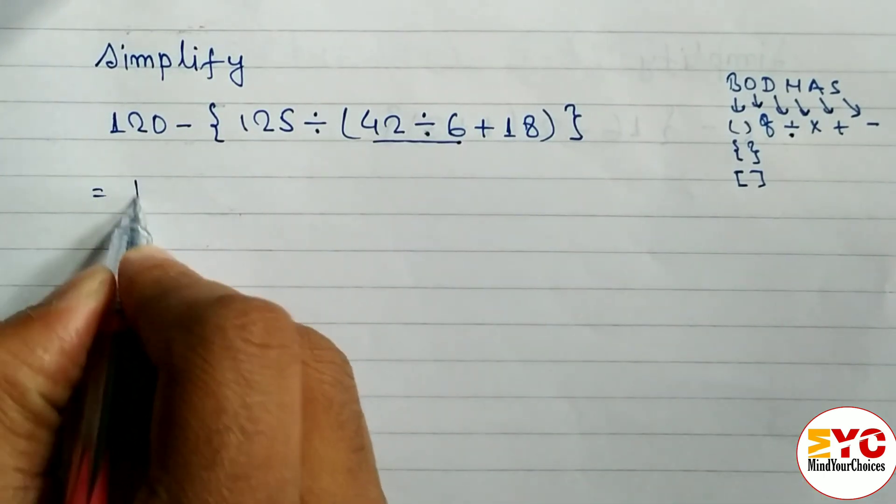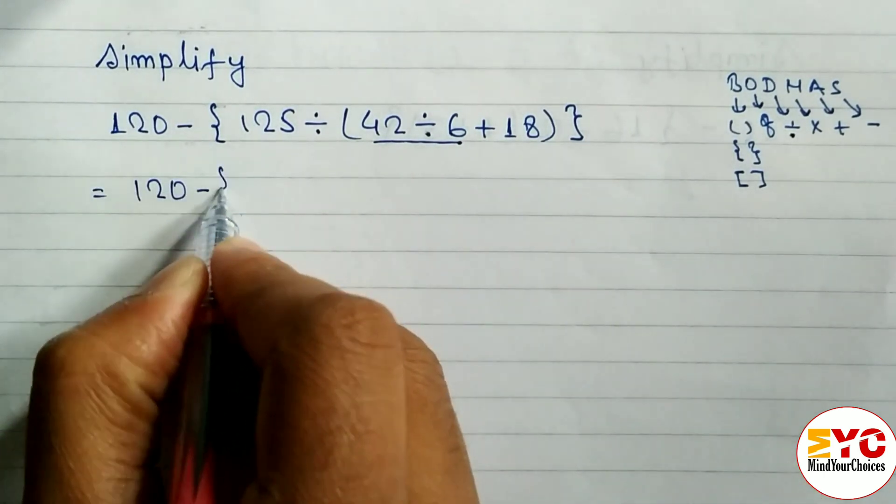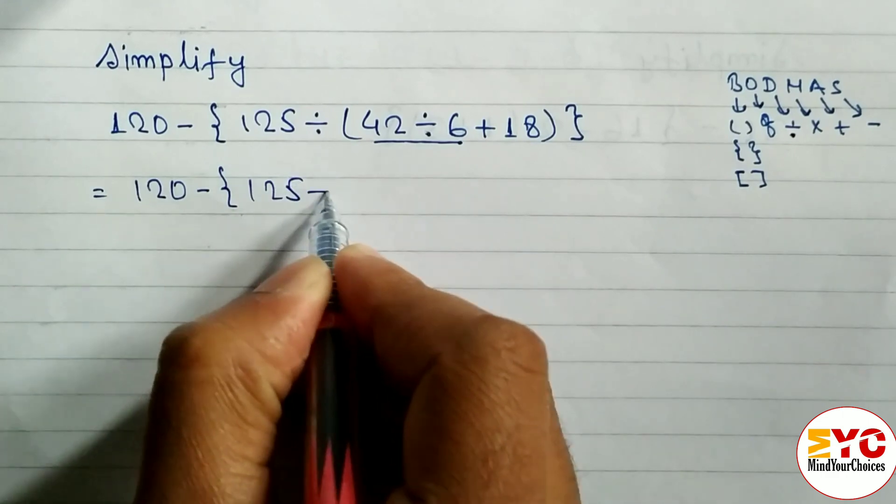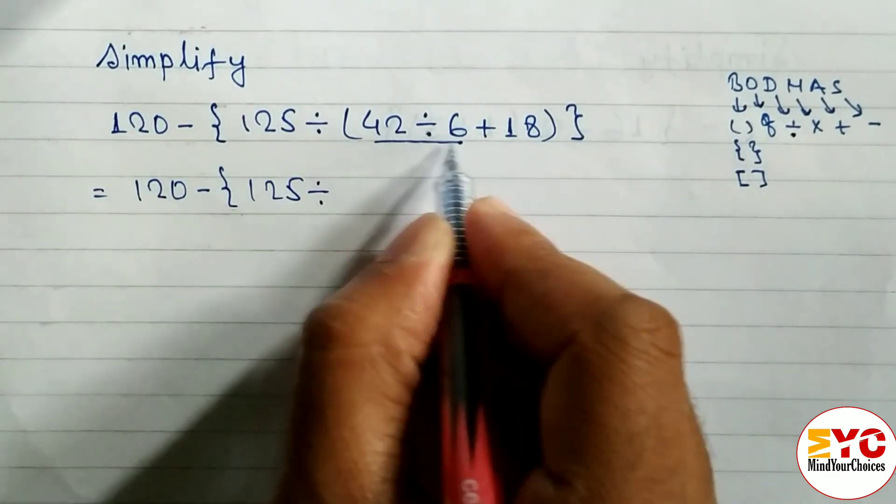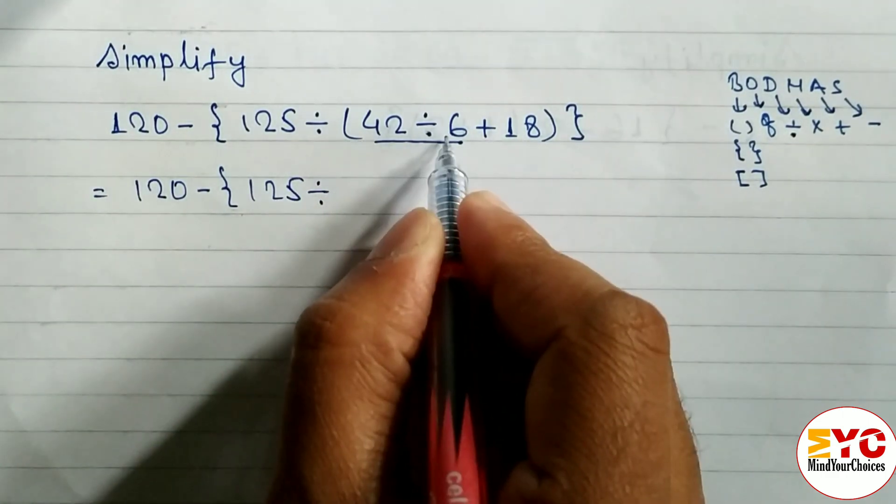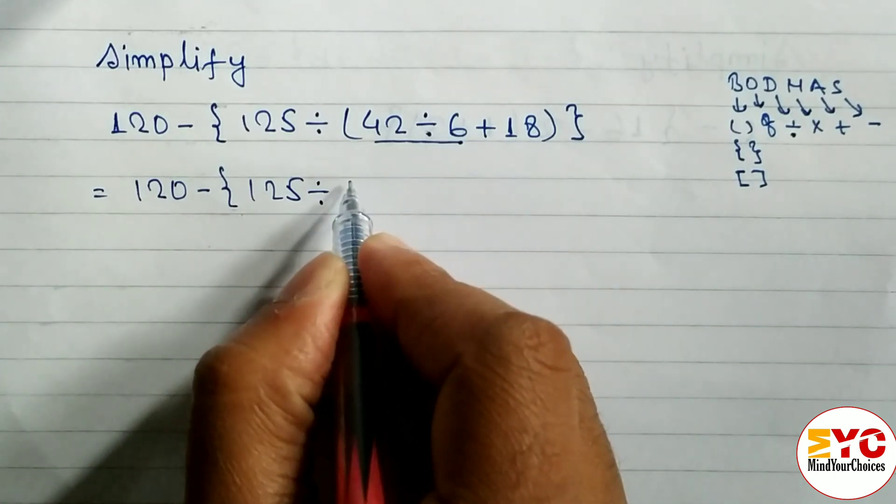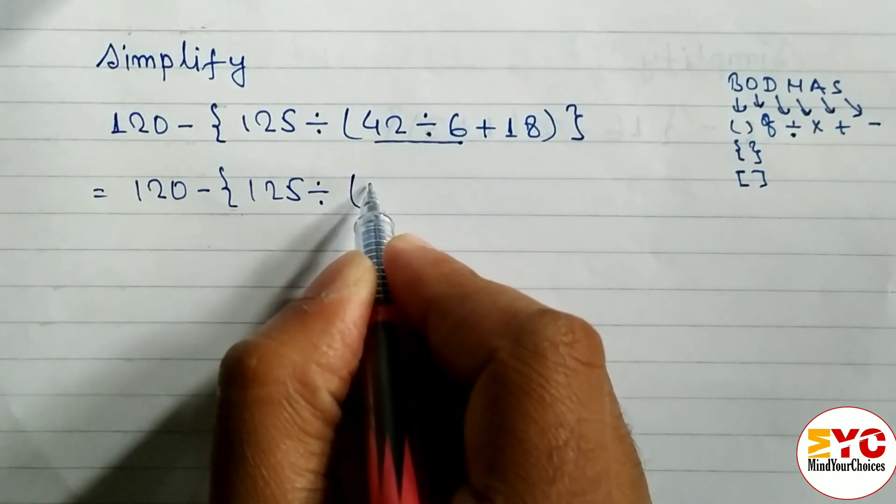So what we have to write? We have to copy the same: 120 minus 125 divide. When you divide, 42 divided by 6, we get here 7. So we have to write inside bracket, you have to write 7 plus 18, bracket off, and finally curly bracket.